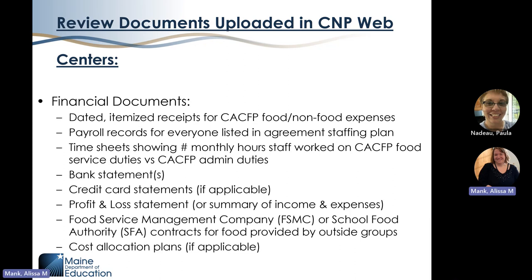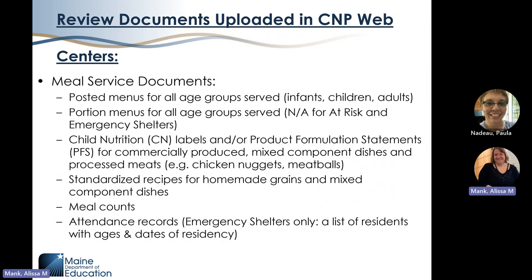To be eligible to operate CACFP, regulations require programs to be financially viable. We verify your business financial viability by looking at your bank statements, credit card statements if applicable, and your business's profit and loss information for the month of review. For meal service documents, we need to verify that you're meeting CACFP meal pattern requirements by looking at your posted and portion menus for all age groups served, manufactured documentation for commercial products like chicken nuggets and meatballs, standardized recipes for homemade grains and mixed component dishes, point of service meal count records, and attendance records.